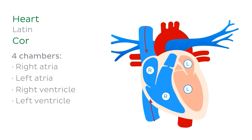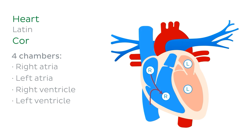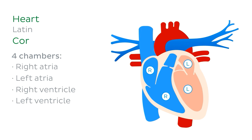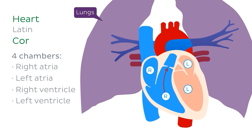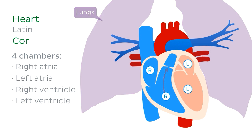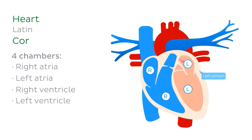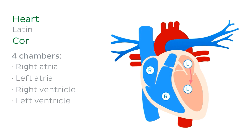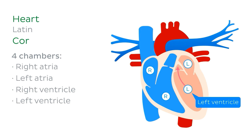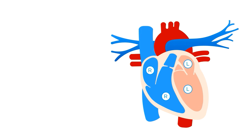Deoxygenated blood first enters the right atrium. From there, blood gets passed into the right ventricle, and when that chamber contracts, blood travels to the lungs to get rid of the carbon dioxide it's carrying and to pick up oxygen. The oxygenated blood then returns to the heart by entering the left atrium. Finally, it moves into the left ventricle, which is the chamber powerful enough to push the oxygen-rich blood into the systemic circulation, and it travels throughout the body.